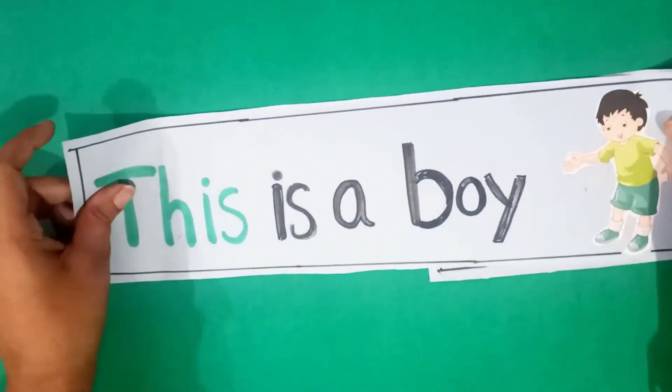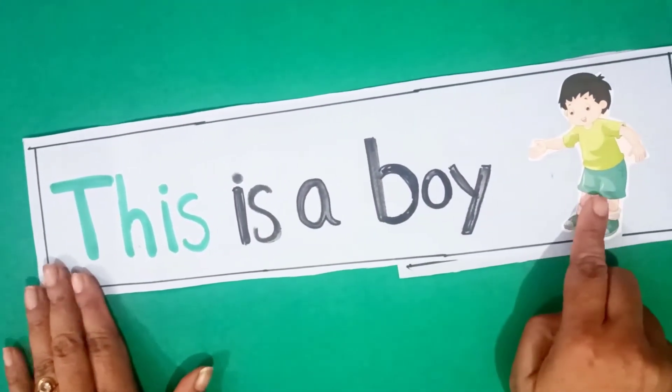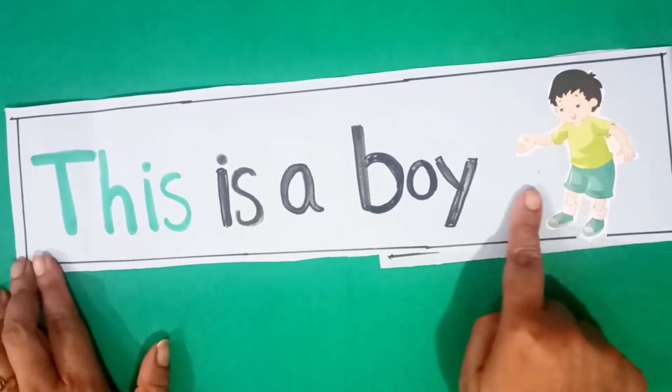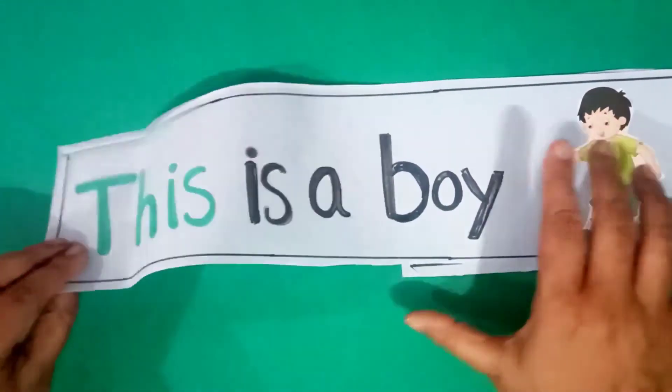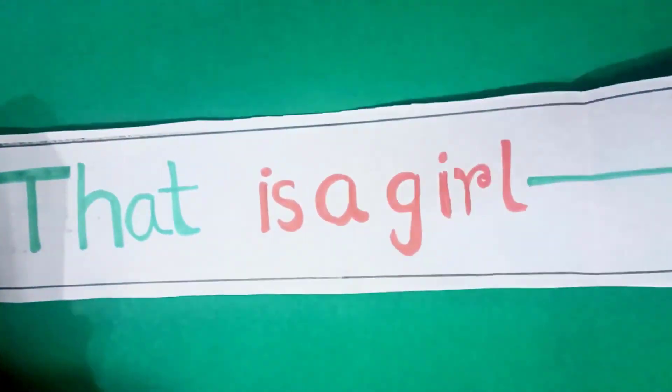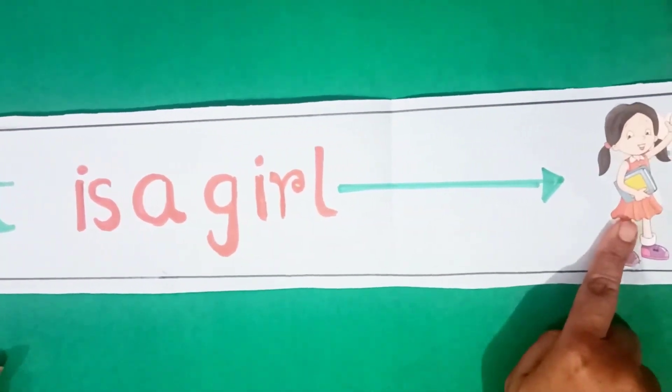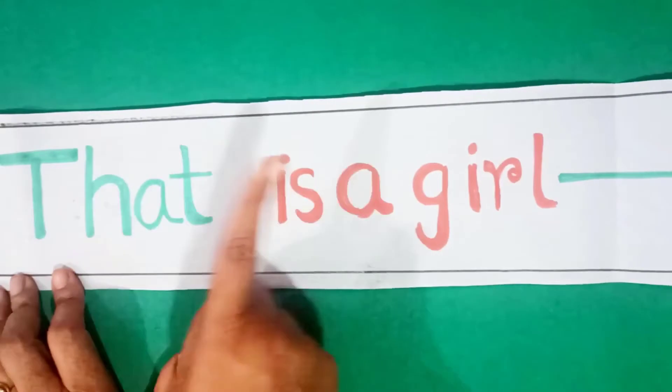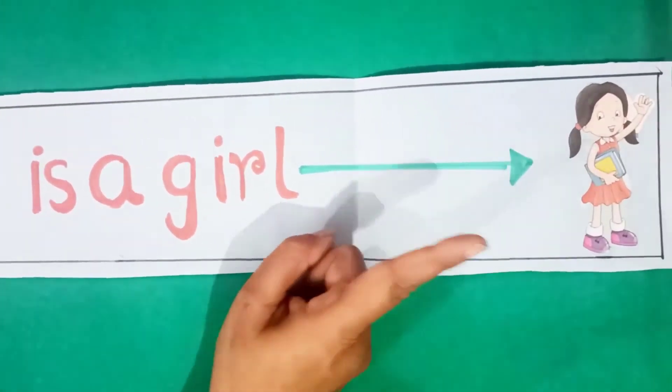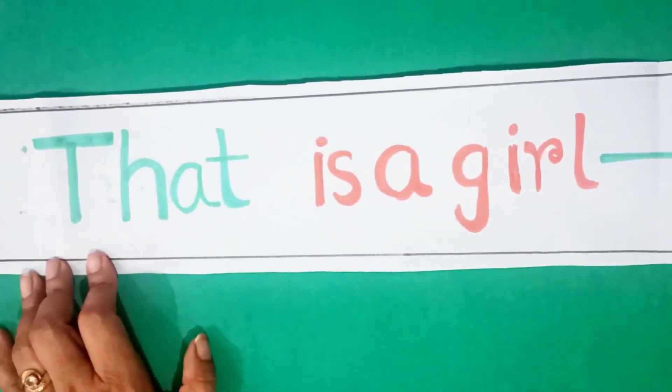Another one I wanted to show you. This is a boy. See, this is a boy. Now, look here. Girl, that is a girl. See, girl is far. So, that way we are showing that that is a girl. That is a girl.